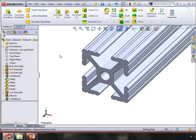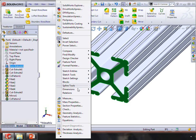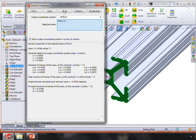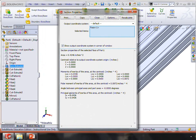Most CAD programs will be able to calculate the moment of inertia for you. In this case, in SolidWorks, I can simply click on this cross-section, go to Tools and Section Properties, and it will give me the moments of inertia as well as the cross-sectional area.